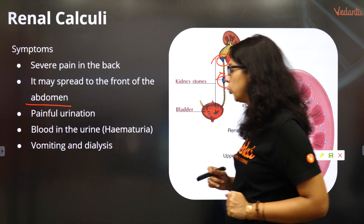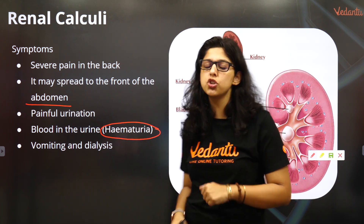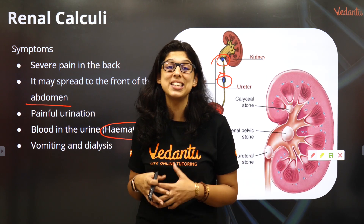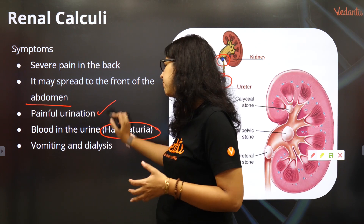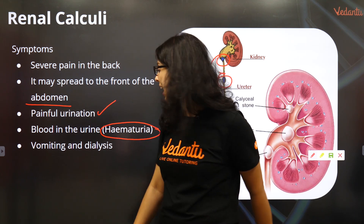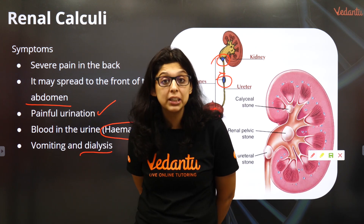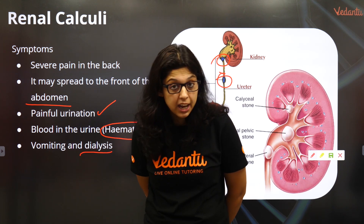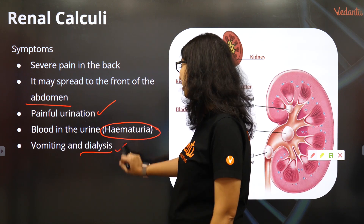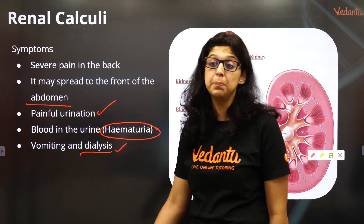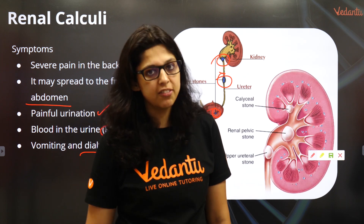Because of the injury it can cause bleeding which will come out in the urine — referred to as hematuria. Hematuria means blood in the urine. There is also very painful urination, vomiting, and sometimes kidney injury, infection, and inflammation. It can even happen after dialysis, so renal calculi is not a great thing to have.